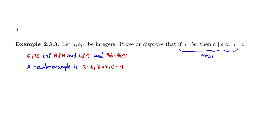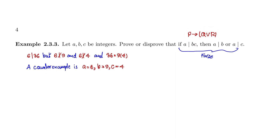Now, if you attempt to prove this, what happens? We have the statement: if P, then Q or R. We have three statements. P is the assumption, Q or R is the conclusion, connected by or.